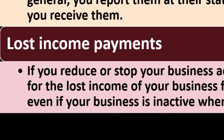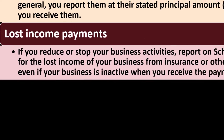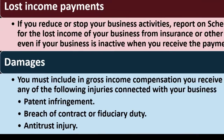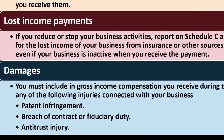Lost income payments: if you reduce or stop your business activity, report on Schedule C any payments you receive for the lost income of your business from insurance or other sources. Report it on Schedule C even if your business is inactive when you receive the payments.